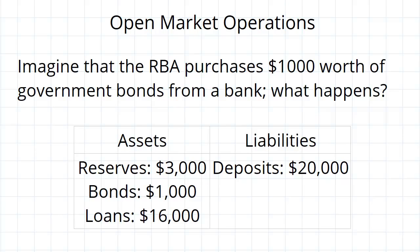So the bank now has a greater amount of reserves, and the RBA can do this with all of the banks. We've said previously that the banks can exchange cash between each other and change the distribution of cash, but they cannot change the total amount of cash. The RBA can change the total amount of cash via this process of open market operations.